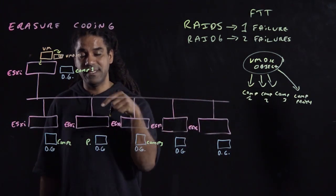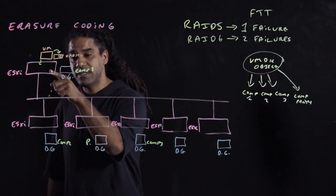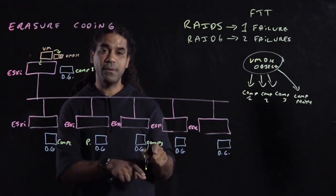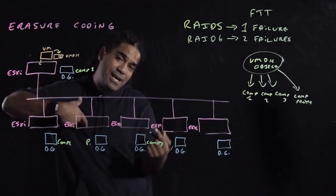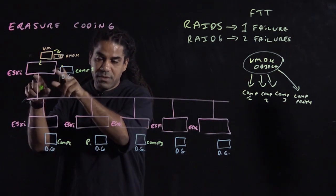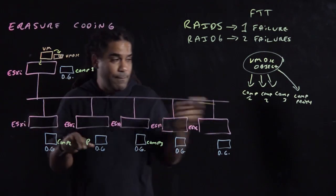Once it decides which of those components gets the write, the host will send the write to the particular component, which would also send a write to the parity disk.